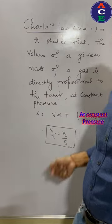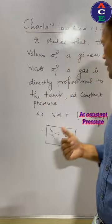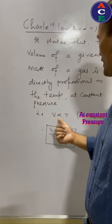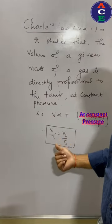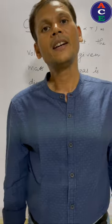V is directly proportional to T at constant pressure. That is, V1 by T1 equals V2 by T2. So this is Charles's law.